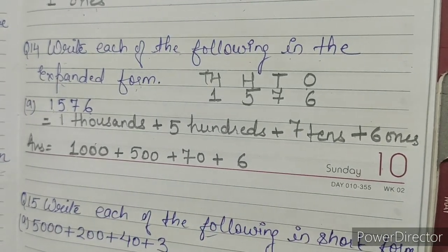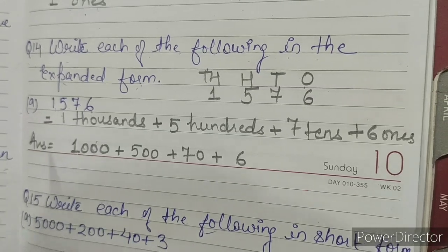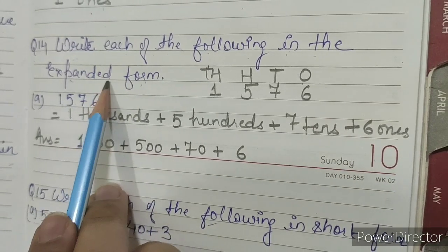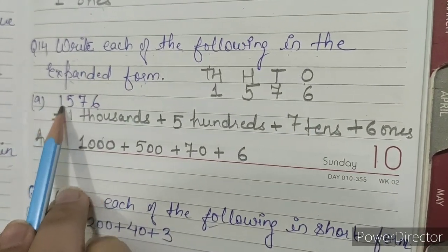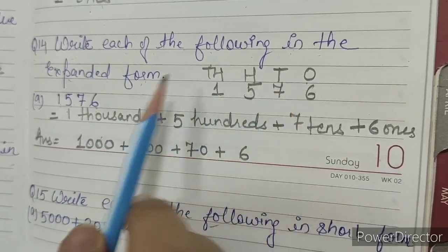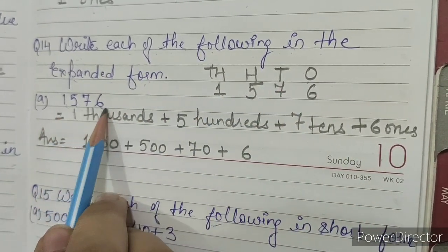Now I will explain in Hindi. Question 14: Write each of the following in the expanded form. The question we have given is 1, 5, 7, 3. First of all, we will show the place value of 1576.